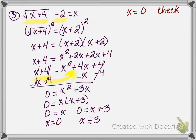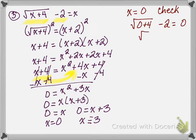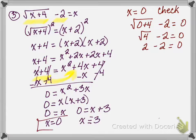I am going to check x equals 0 by going back to the original equation and plugging in 0 for x. I have the square root of 0 plus 4, minus 2, equals 0. The square root of 4 is 2, and 2 minus 2 equals 0. That checks, so x equals 0 is part of my solution.